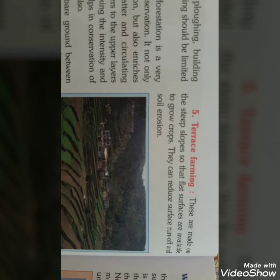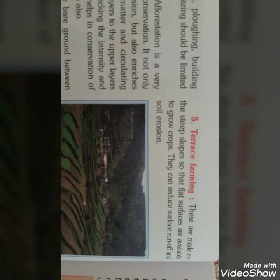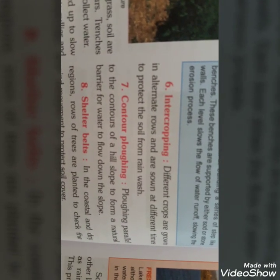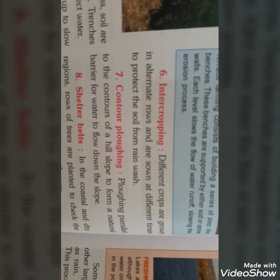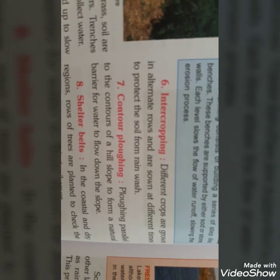जहाँ पर बहुत ज़्यादा slopy जमीन है, वहाँ पर terrace farming करनी चाहिए, जिसकी वजह से soil erosion नहीं होगा। Inter-cropping — अलग-अलग crops उगानी चाहिए rows में, ताकि अगर बारिश आए तो उसकी वजह से मिट्टी उसके साथ ना बहे।